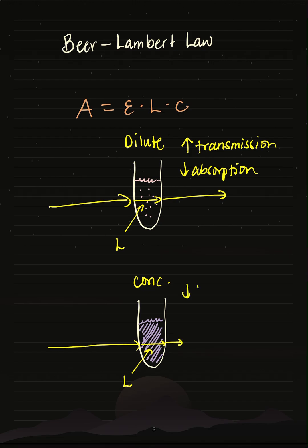So my concentrated solution has a low transmission, so not a lot of light is passing through, but there's a high absorbance. So why is that the case? Let's use our Beer-Lambert Law formula above.